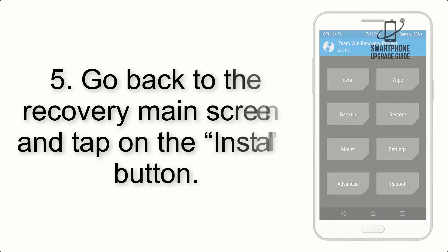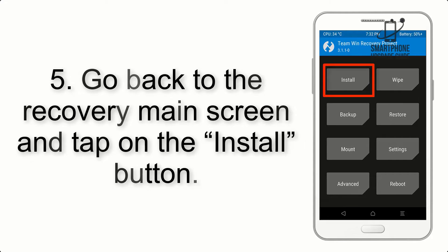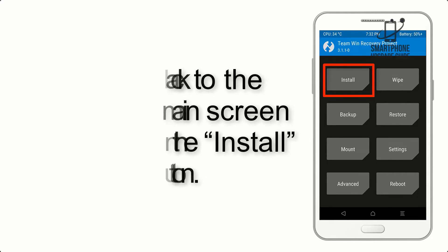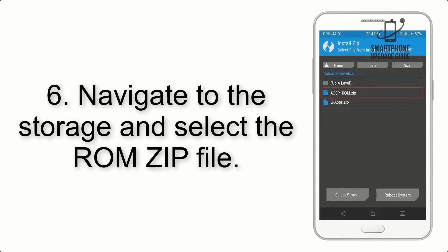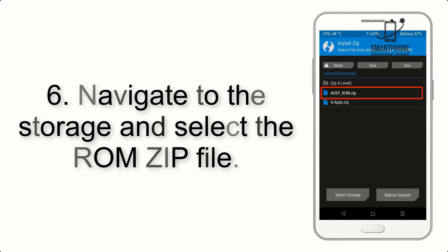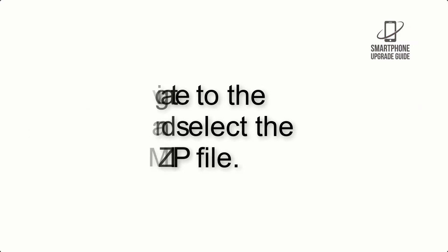Step 5: Go back to the Recovery main screen and tap on the Install button. Step 6: Navigate to the storage and select the ROM ZIP file.